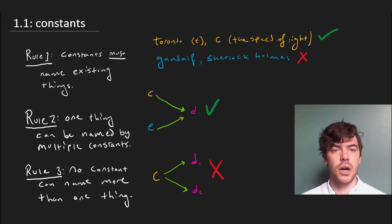In summary then, constants must name an item. One thing can have many names, but no one name can apply to many things. And that's all we have for constants right now.